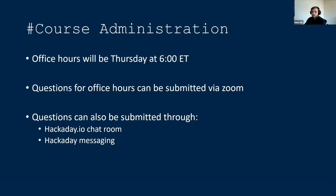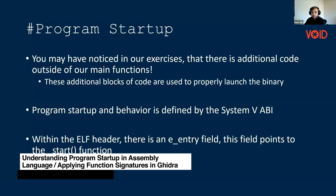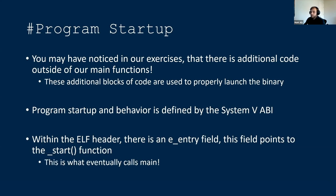Let's talk about how programs actually start up. If you looked at the exercises, there's additional code beyond just the main function, and all of these code blocks are used to assist with properly launching the binary. All of this startup behavior is defined by the ABI. When you look at the ELF header, there's a specific field called the eEntry field, which points to the underscore start function, and that eventually is what calls main.